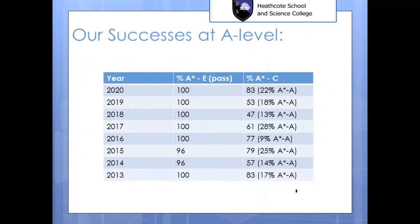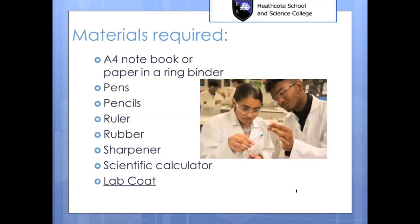These are our A-level results since the beginning of the sixth form at Heathcote. As you can see, for the last five years no one has failed chemistry, and we have a good percentage of A* to C students. This varies across years because it's a very small sixth form, so you get a lot of individual attention and your teachers get to know you very well — though the small numbers mean grade percentages can vary over time.